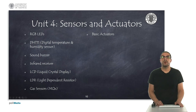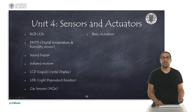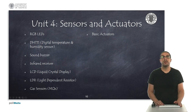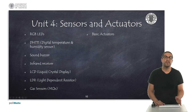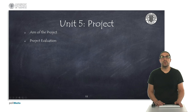In Unit 4 we will start working with sensors and actuators typically used in IoT applications, such as RGB LEDs, temperature and humidity sensors, a sound buzzer, an infrared receiver, an LCD display, a light sensor, even a gas sensor, and some basic actuators such as a relay and a servo. In Unit 5 we want you to develop your own device using previous course contents, and for that we will provide you with some hints to succeed with the project.